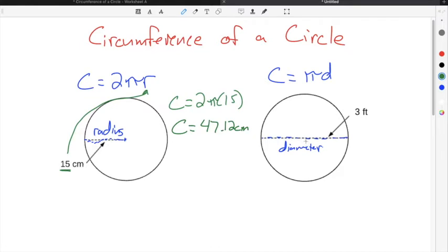In our second example, it gives us diameter. The diameter in this case is 3 feet, so we take 3 and substitute it in for d. So we're going to do π times 3, and then you take your circumference formula and you solve π times 3, which gives you 9.42 feet.